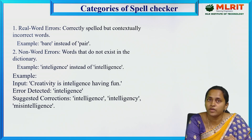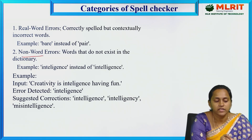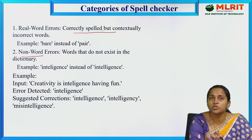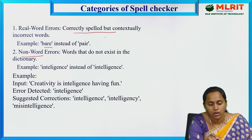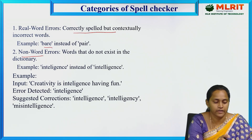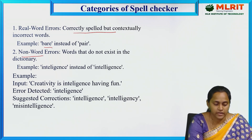There are two types of errors: real-world errors and non-real-world errors. Real-world errors are correctly spelled but contextually incorrect words — for example, writing 'bear' instead of 'pair'. The spelling is correct but the word used in the sentence is incorrect.